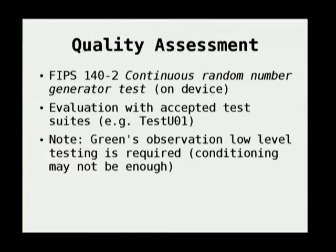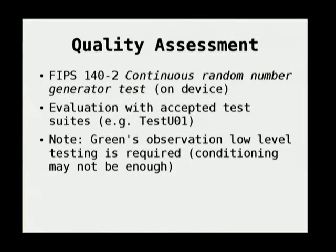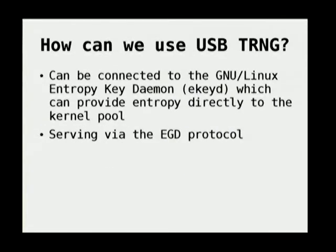There are many ways to analyze the quality of a random number generator. The FIPS standard is pretty modest — basically just telling you if the thing is alive or dead. We can do much better. There are a number of test suites; I'd love to hear everyone's opinion about which to use. TestU01 is one that's become very popular. The idea is to leverage what SymTech did — connect with the entropy key daemon and EGD so other applications can take advantage of the entropy pool.